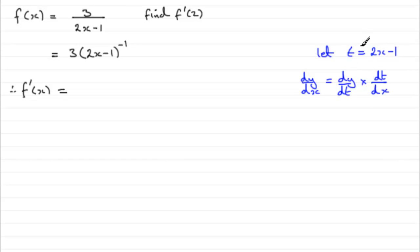So what we would have is that if we let t equal 2x minus 1, we would then have that y, or in our case f of x, would equal 3 multiplied by t to the minus 1. So if we're doing this differentiation here, first of all, we've got to find dy by dt.